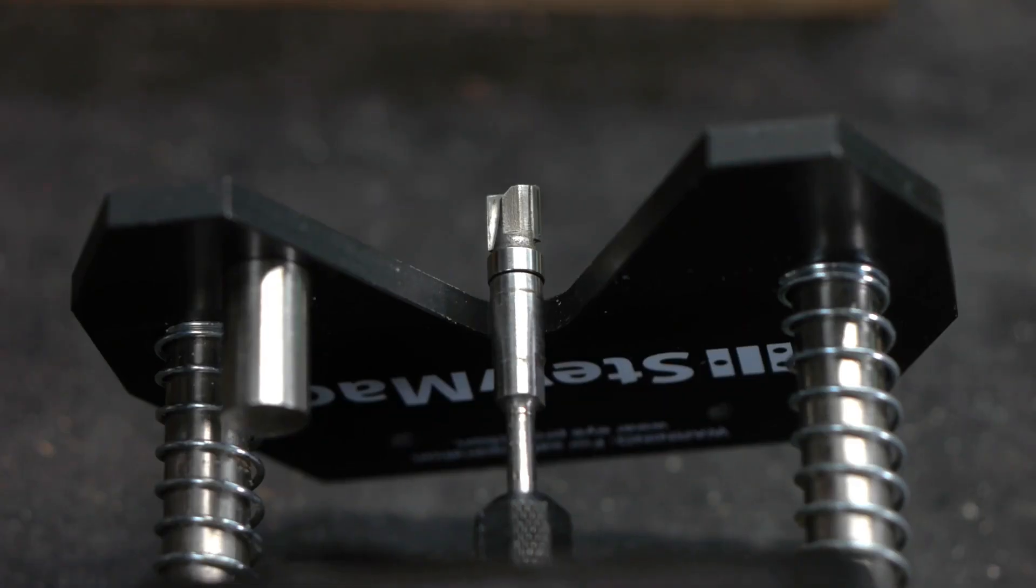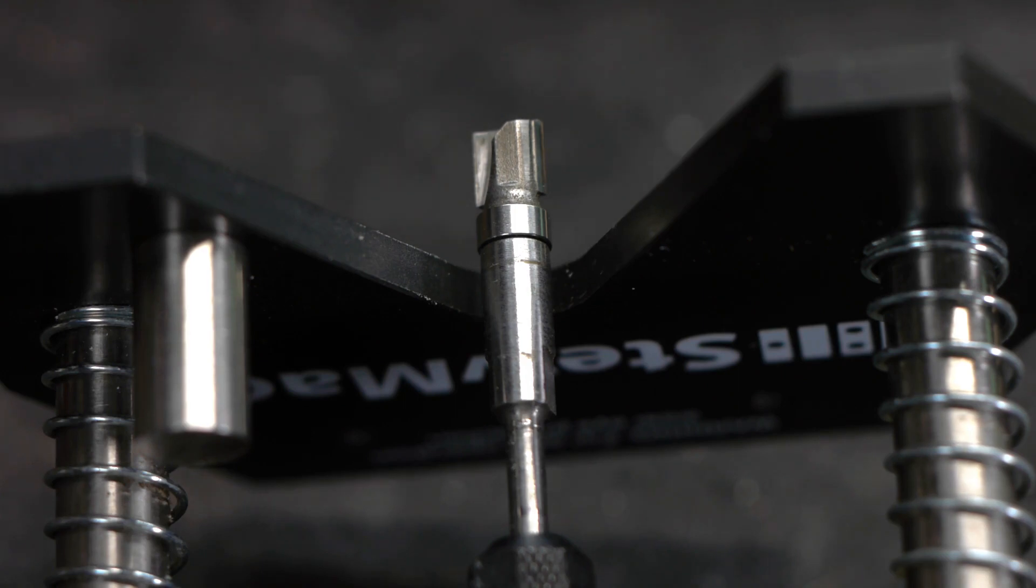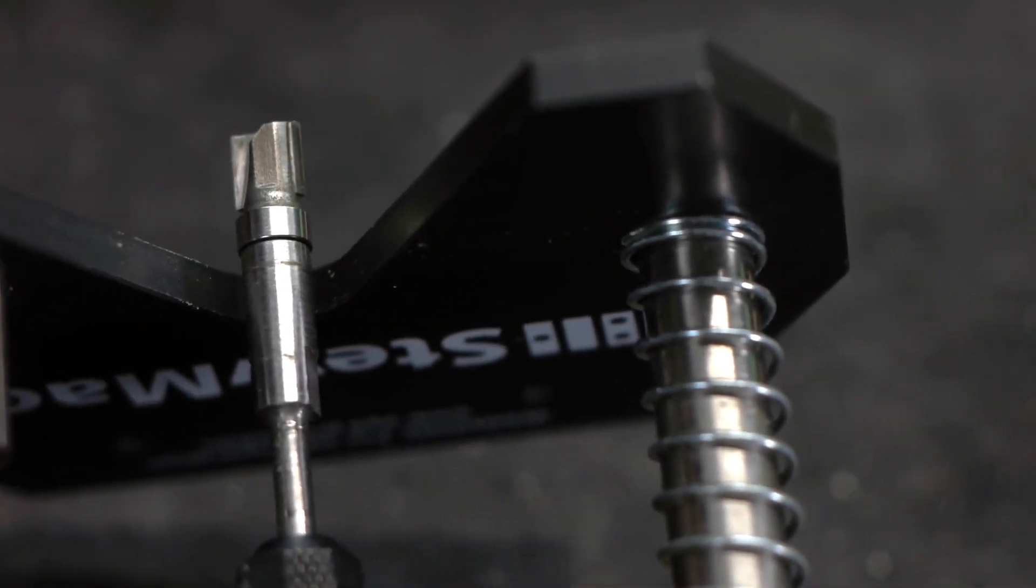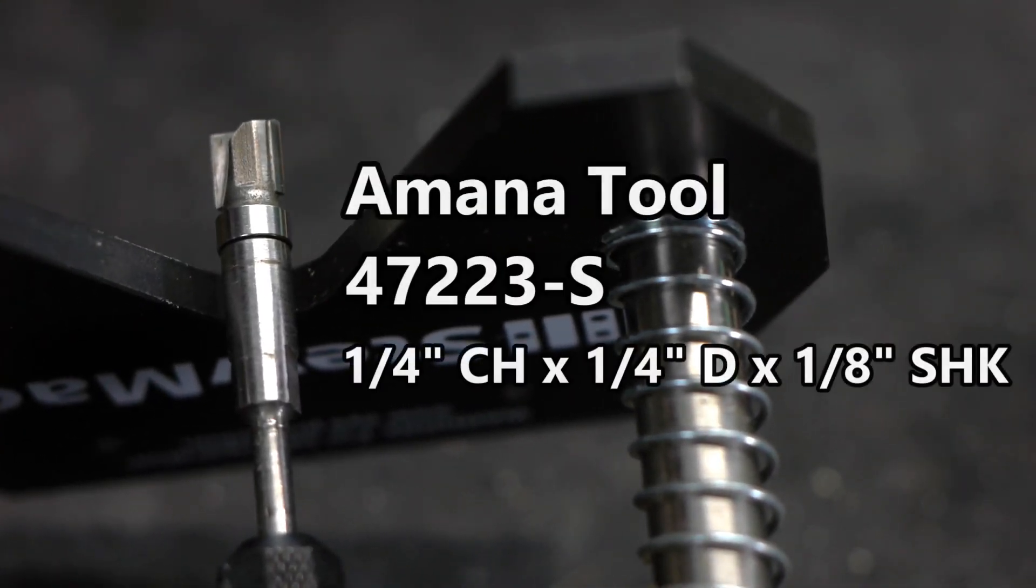The router bit is my faithful 47223S guide bearing router bit from Amana Tool, which has a quarter-inch diameter by quarter-inch height cutter and an eighth-inch shank. This little bit is an absolute home run for so many precision routing jobs, I can't recommend it highly enough.